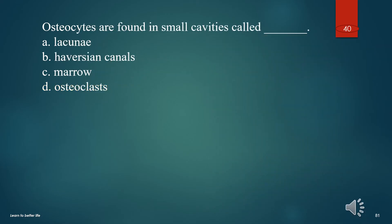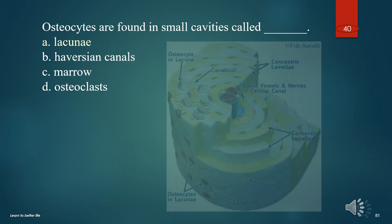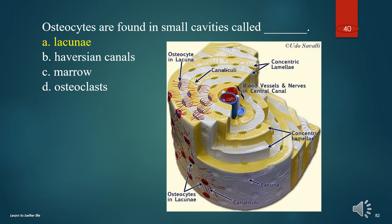Osteocytes are found in small cavities called what? A. Lacunae. B. Volkmann's canals. C. Marrow. D. Osteoclasts. The answer is A. Lacunae.